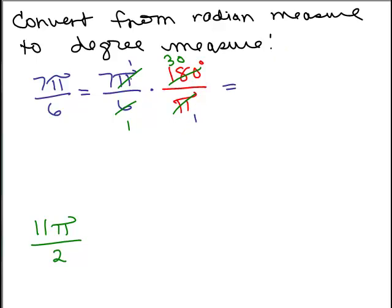By the way, the π's cancel, those are just ones, right? So we have 210 degrees over 1. We're just going to write 210 degrees.